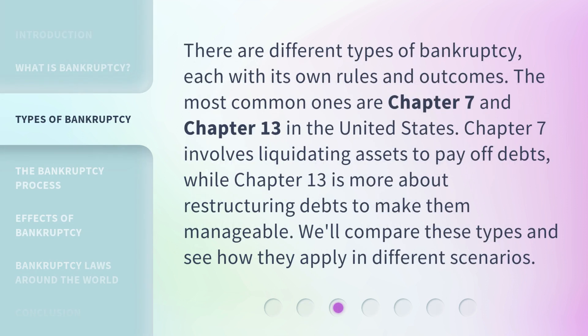There are different types of bankruptcy, each with its own rules and outcomes. The most common ones are Chapter 7 and Chapter 13 in the United States. Chapter 7 involves liquidating assets to pay off debts, while Chapter 13 is more about restructuring debts to make them manageable. We'll compare these types and see how they apply in different scenarios.